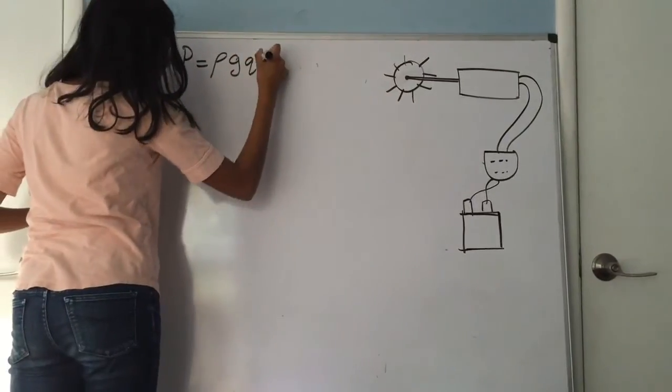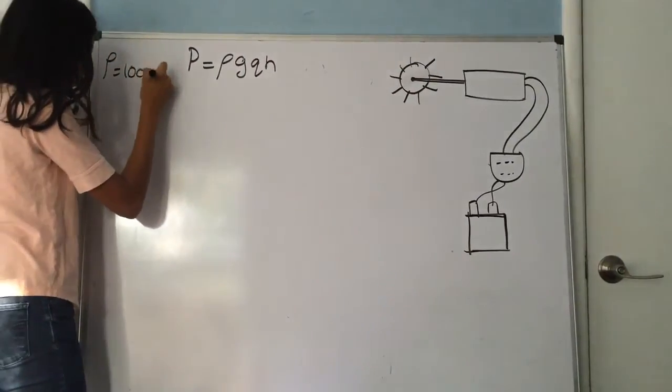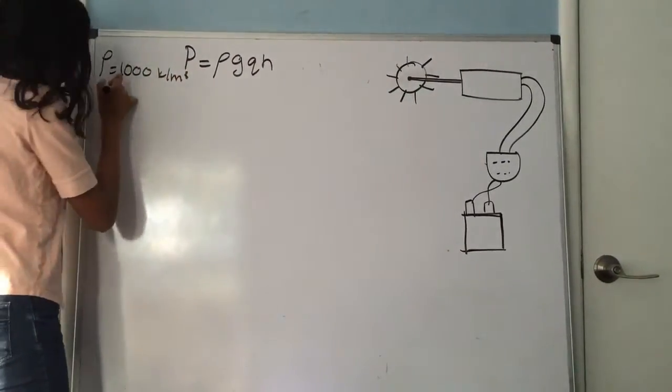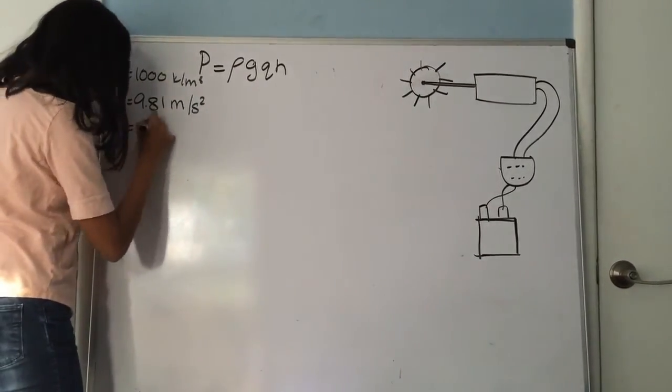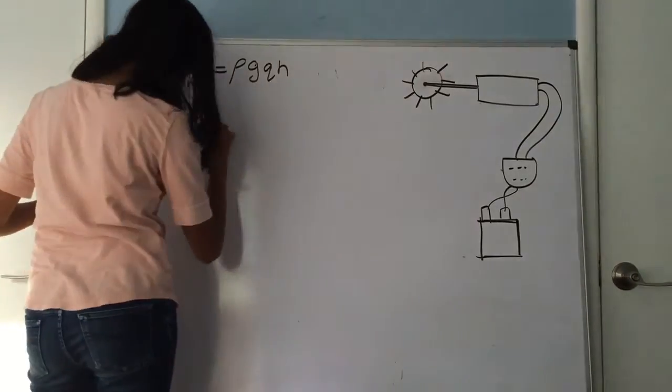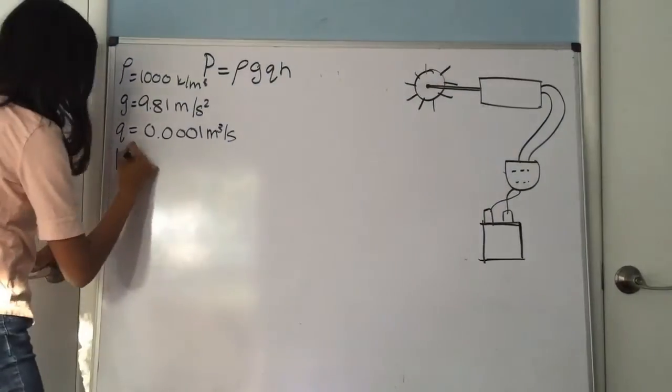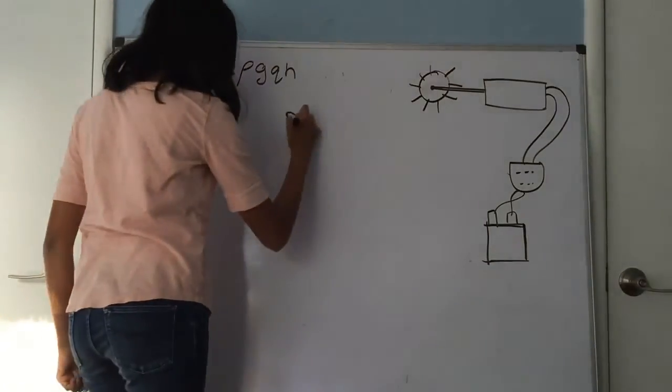In order to calculate the amount of power generated, we wrote this equation: rho times G times Q times H. Rho is the density of water, G is the gravitational constant, Q is the volume of the water flow, and H is the height at which the water drops.